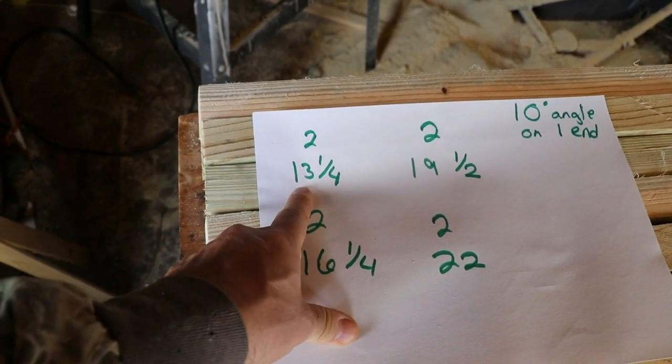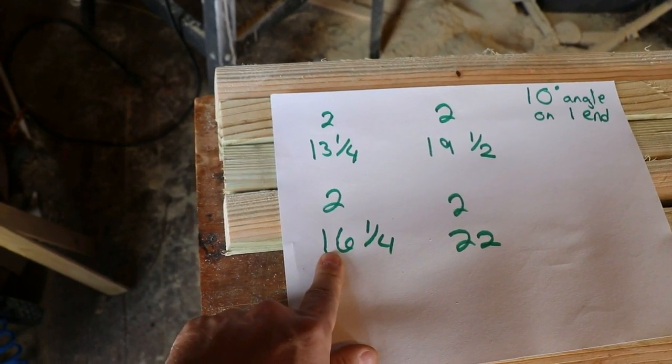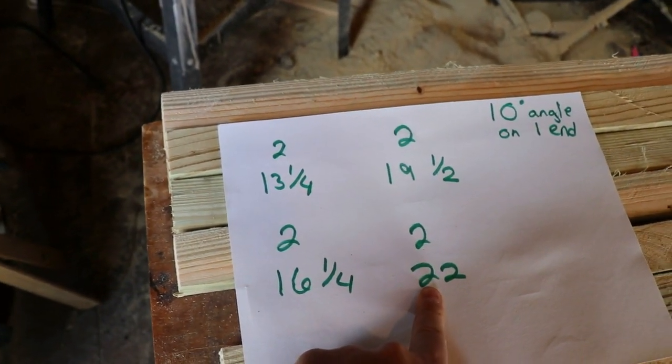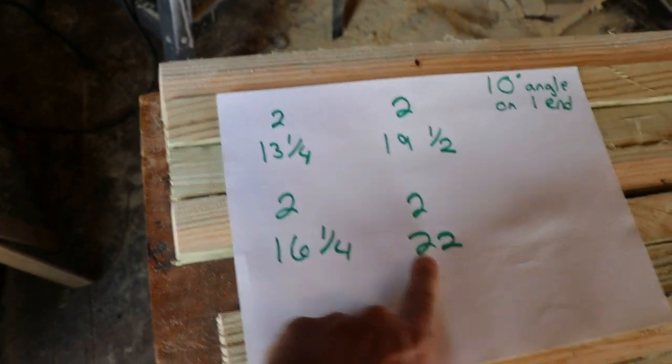So on one end you're going to have two of the 13 and 1/4, two at 16 and 1/4, two at 19 and 1/2, and two at 22 inches. All of that is in inches. All right, here we go, we're going to get started building.